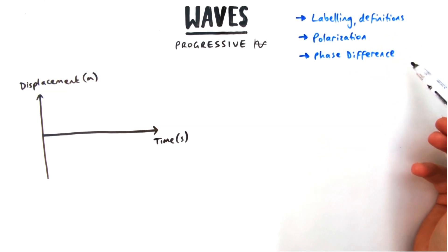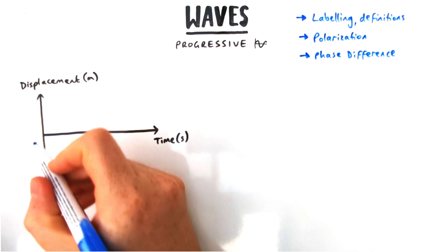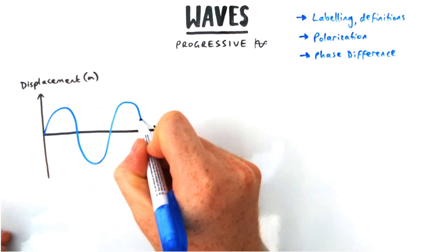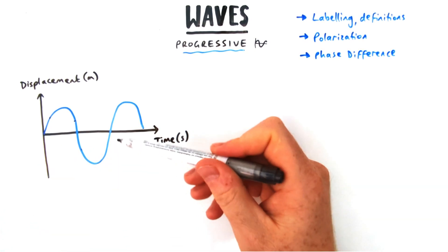Today's video we're going to look at waves, in particular progressive waves, which means waves that are not stationary waves, just those regular waves like sound and light. So we'll look at labeling, definitions, what polarization is, and also what phase difference is.